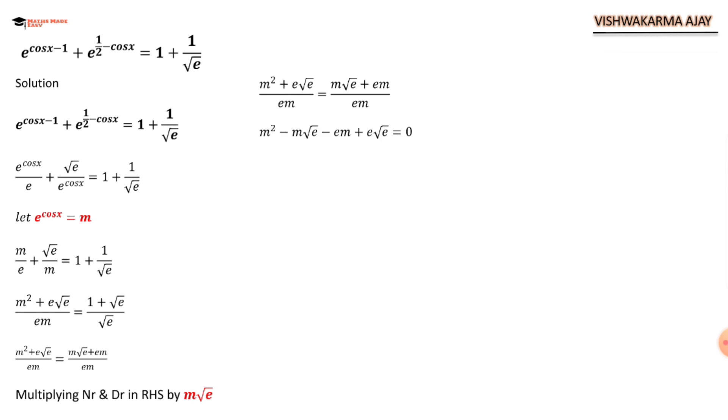We have m square minus m root e. I take it to the left hand side. Minus em. I will take it to the left hand side. Plus e root e is equal to zero. Now, if you can see this, this is a form of quadratic equation which is already been simplified for us. Usually, quadratic equation comes in x square plus ax plus b is equal to zero.